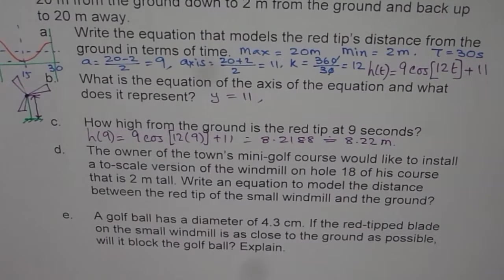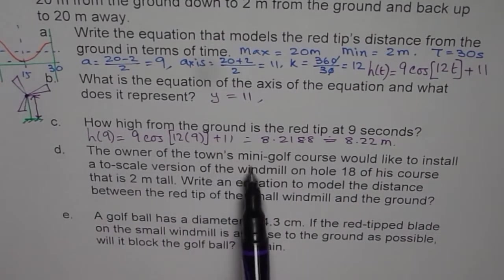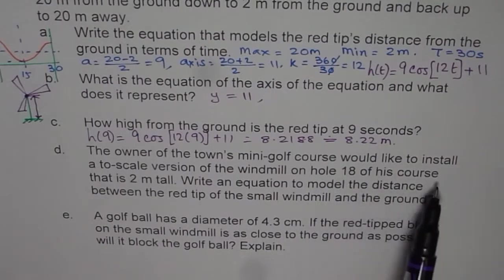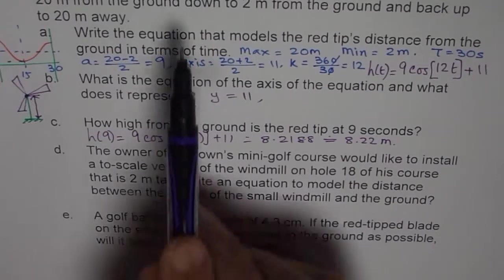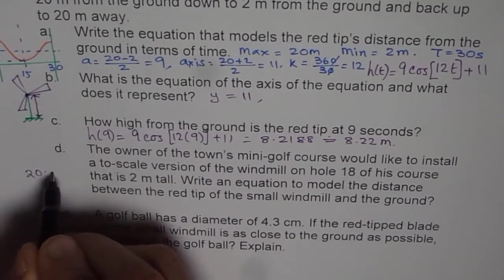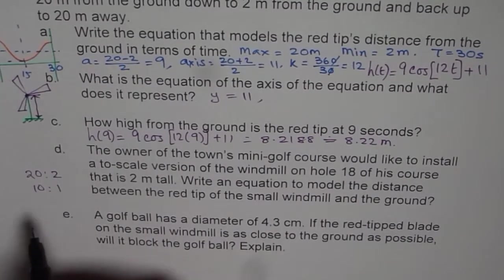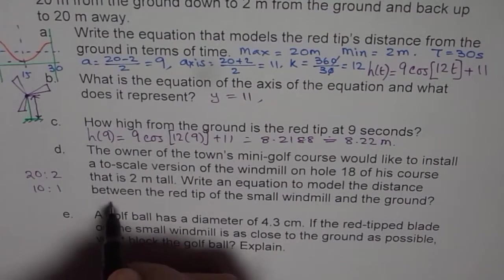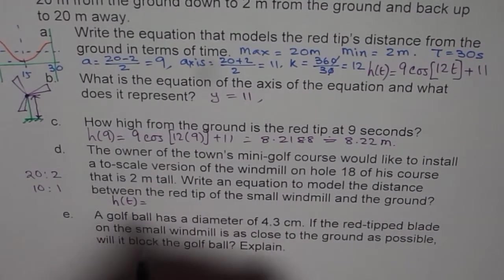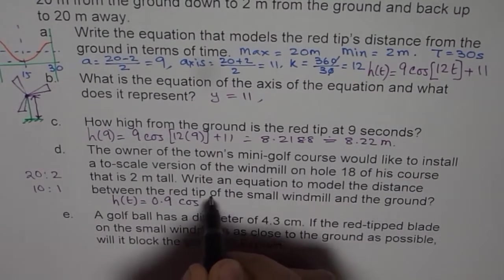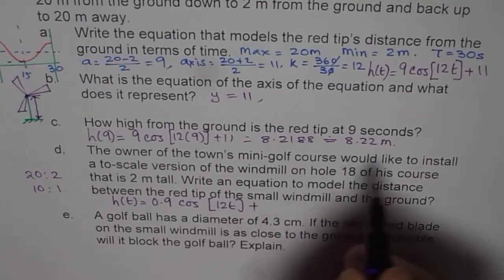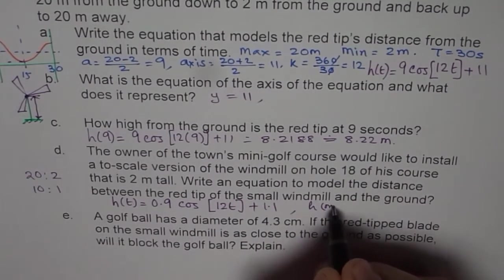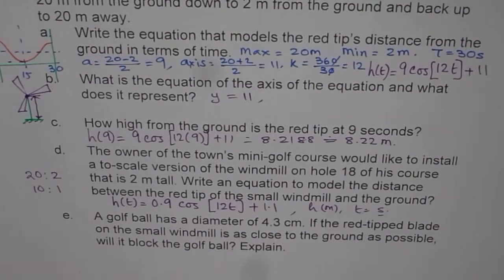Here is my suggestion. Now here it says that the owner of the town's mini golf course would like to install a to-scale version of the windmill on hole 18 of his course that is 2 meters tall. So earlier it was 20 meters tall. So the scale is from 20 to 2. So it is 10 to 1. So one-tenth of a scale. So in this equation, everything will become one-tenth. So the equation now will be equals to h of t equals to one-tenth of 9 is 0.9. And we have cos of 12t plus one-tenth of 11, which is 1.1. So that becomes the equation. Still, the units are the same. Height is in meters and time is in seconds.